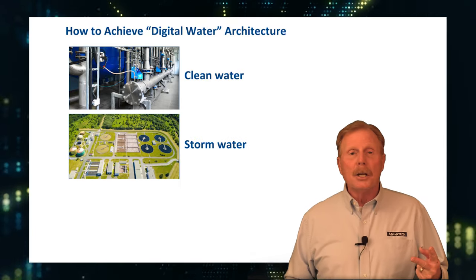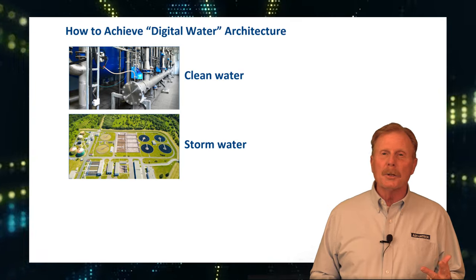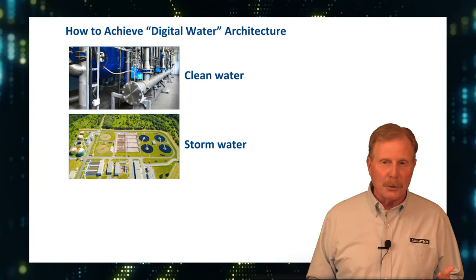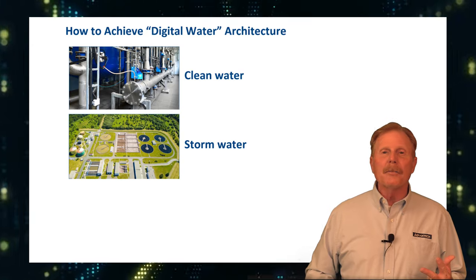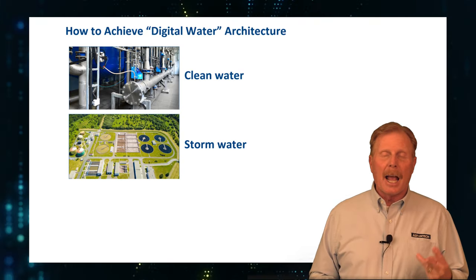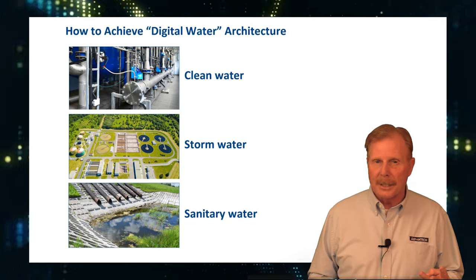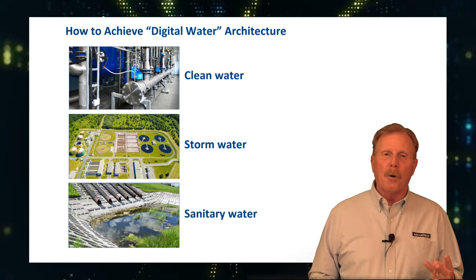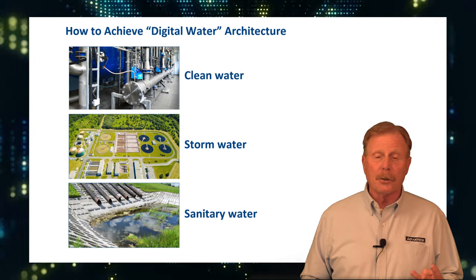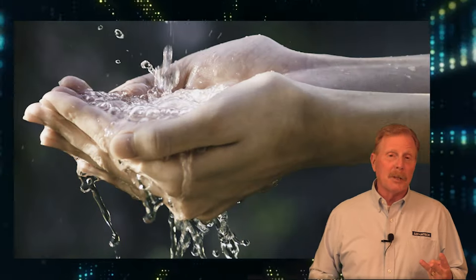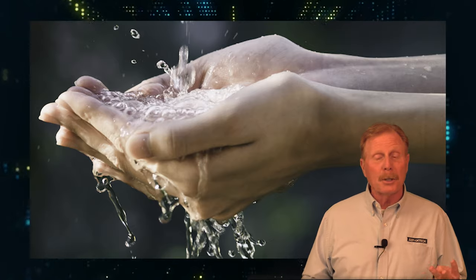Secondly, it talks about storm water and storm water control. This would include retention ponds, dam control, and actually handling water in the event of flooding and emergencies. The third area is dealing with septic and sanitary systems — a way to make sure that water is collected, purified, and returned to the watershed, because we know that water is one of the most renewable resources on the planet.